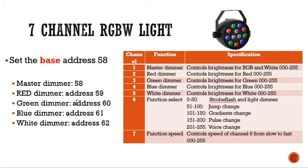On the seventh channel, there are additional functions. Channel 6 is our function select — if we set a value of 40 on channel 6, that will turn it into a strobe flash. Channel 7 is the speed of the strobe. Going back to channel 6, we can also have a gradient change: if we set the function value between 101 and 150, on address 63 it will do a gradient change, cycling between the red, green, blue, and white colors gradually — getting brighter then dimming — and how fast it cycles depends on channel 7.